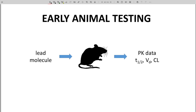In the later stages of lead optimization, a lead may be tested in animals — in vivo testing. Plasma drawn from the animal can give information on plasma concentration of the molecule, the half-life, volume of distribution, clearance, and even the identity of different metabolites. This is great information, but studies in animals are very expensive and time-consuming, and there are also ethical considerations for animal testing.